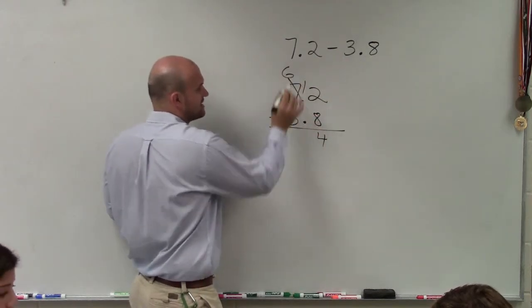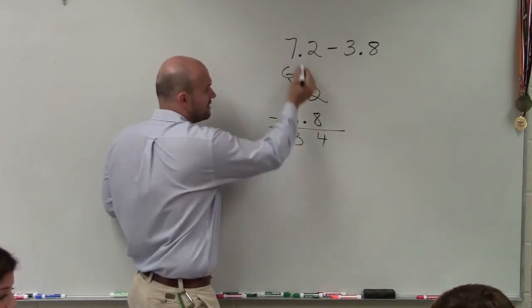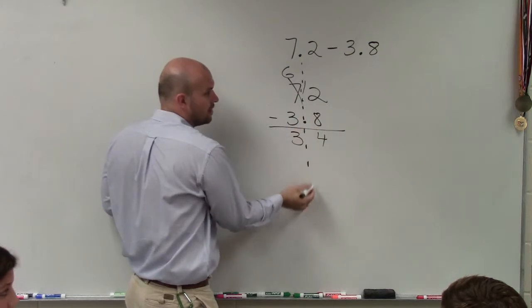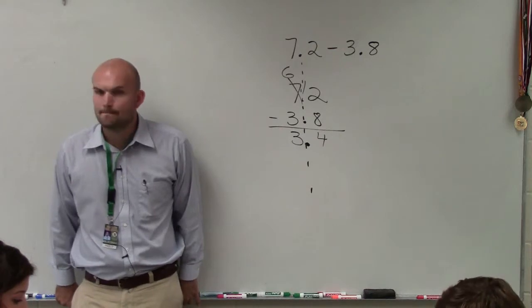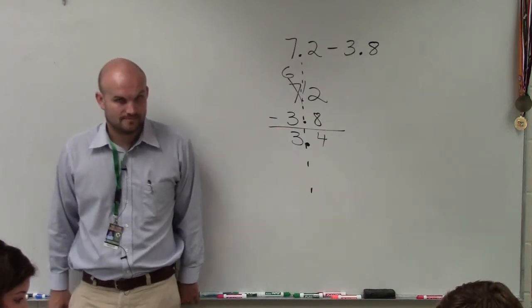12 minus 8 is 4. 6 minus 3 is 3. The decimals are all in the same alignment. So my final answer is 3.4. Make sense? OK.